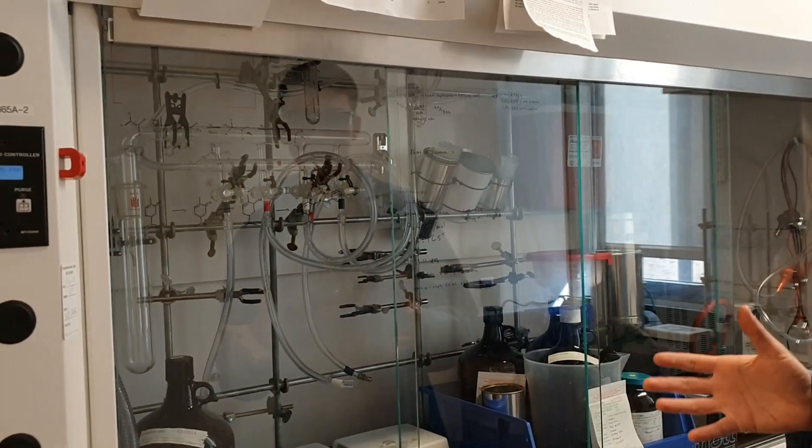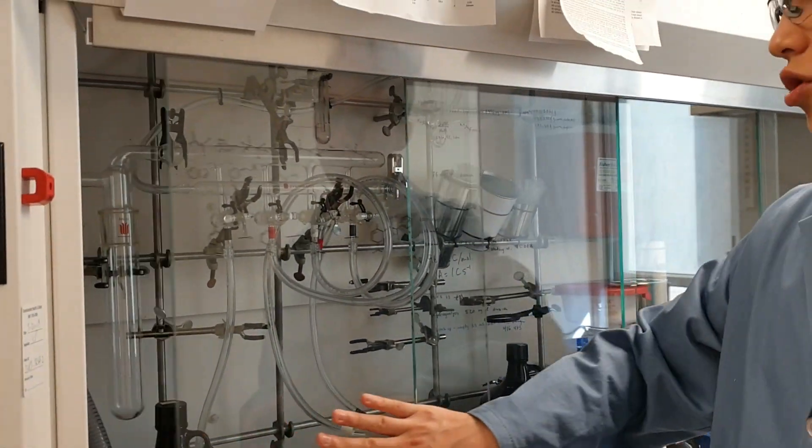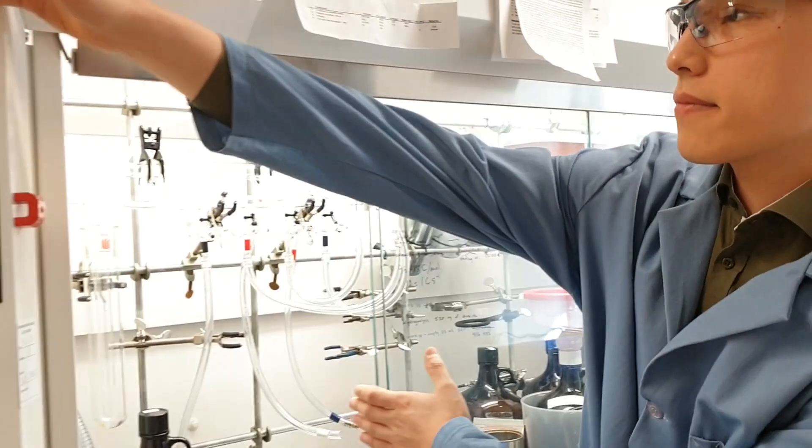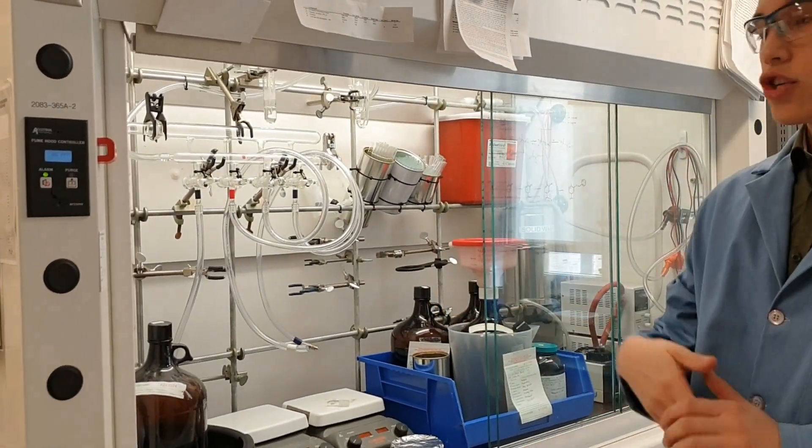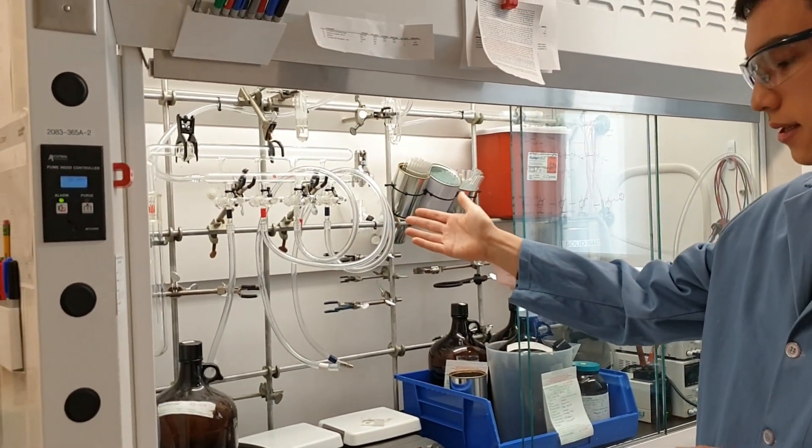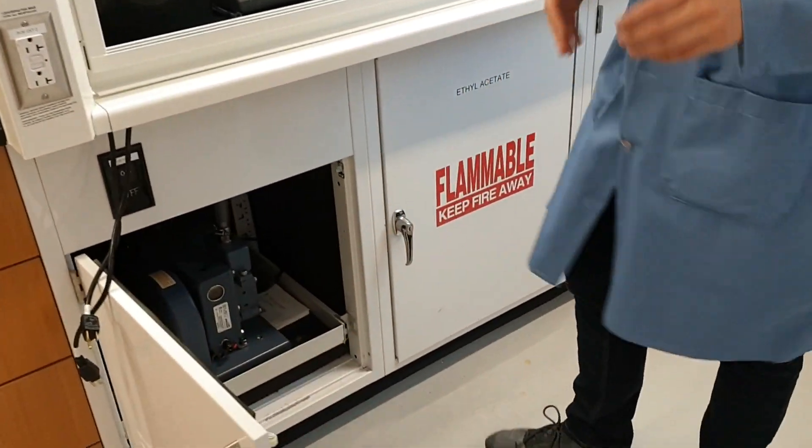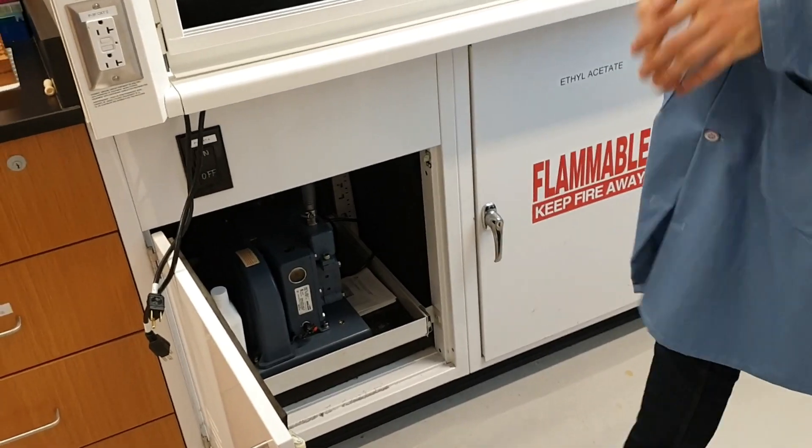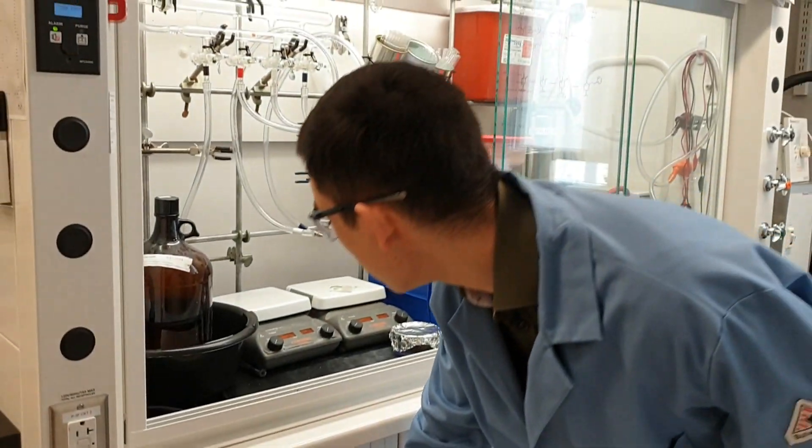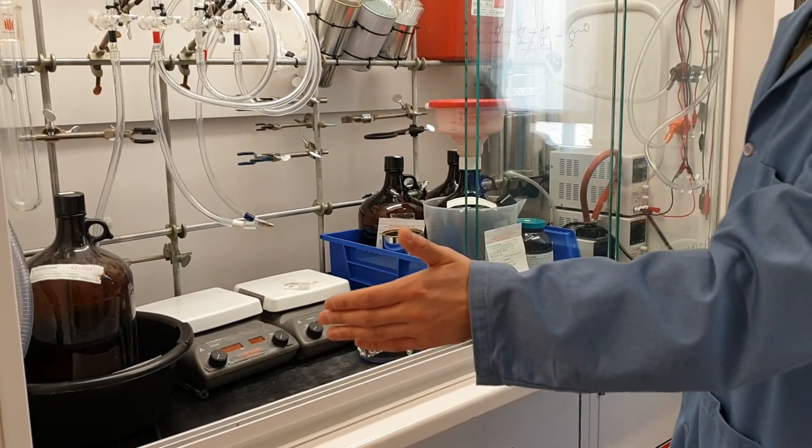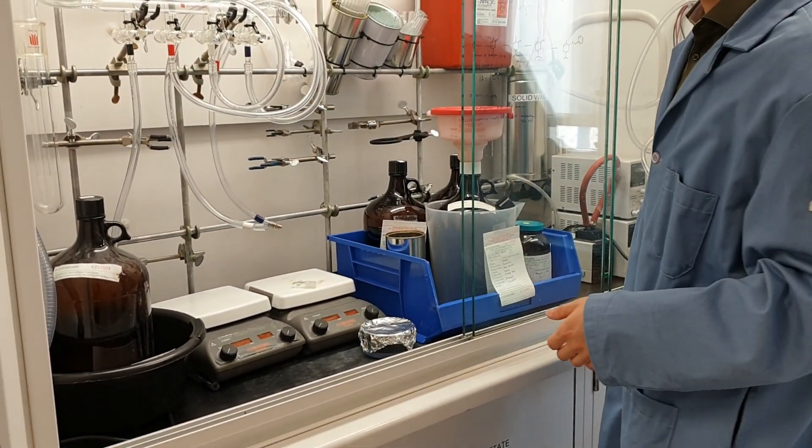Each fume hood in our lab has their own schlenk line. Every fume hood has their schlenk line with in-house nitrogen system. Each fume hood has their own vacuum pump and a lot of fume hood space to set up as many reactions as you want.